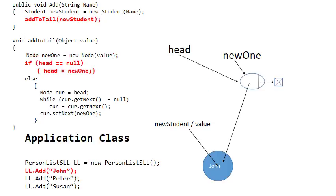The next statement in the addToTail method checks whether head is null. In this case, head is null because the list is empty, and then what it simply does is make head point to new1. So head points to that node, which now becomes the first node in the singly linked list. The head pointer simply points to the new node. So effectively, John has now been added to the list — a singly linked list that contains one node.